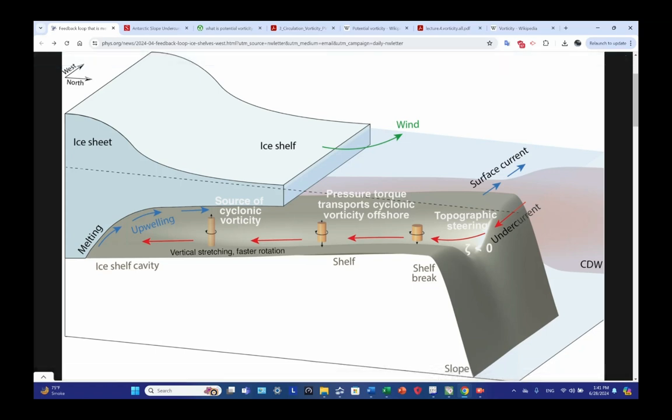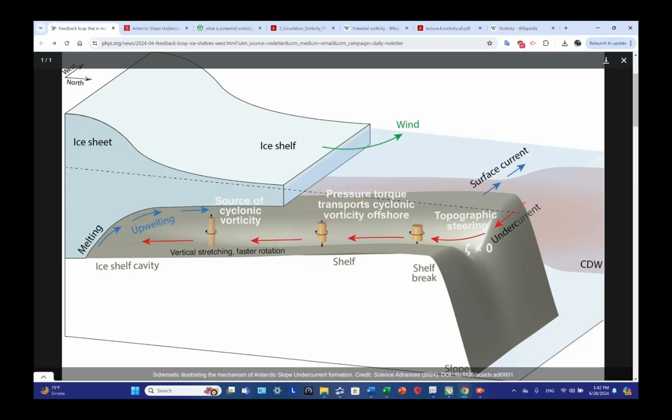A good way to think about this is observe a figure skater when he or she goes into a spin as part of their routine. When they first start their spin, their arms are out away from their body and they're spinning, but slowly. Then, as they bring their arms closer to their torso and then move their arms up over their head, they're stretching themselves, and what happens to their rate of spin? They spin faster.